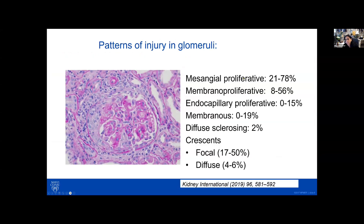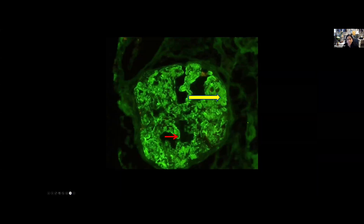The patterns of injury are very variable. It's usually mesangioproliferative, but it can have a membranoproliferative or endocapillary proliferative pattern of injury. There are rare reports of fibrillary having a membranous pattern of injury. Crescentic glomerulonephritis can also be seen in a small percentage, less than 20%. By immunofluorescence, the typical description is a very smudgy deposition, as seen with this yellow arrow.